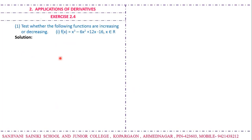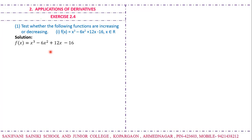The first problem: test whether the following functions are increasing or decreasing. The given function is f(x) = x³ - 6x² + 12x - 16, where x belongs to ℝ. We take this function and differentiate with respect to x.